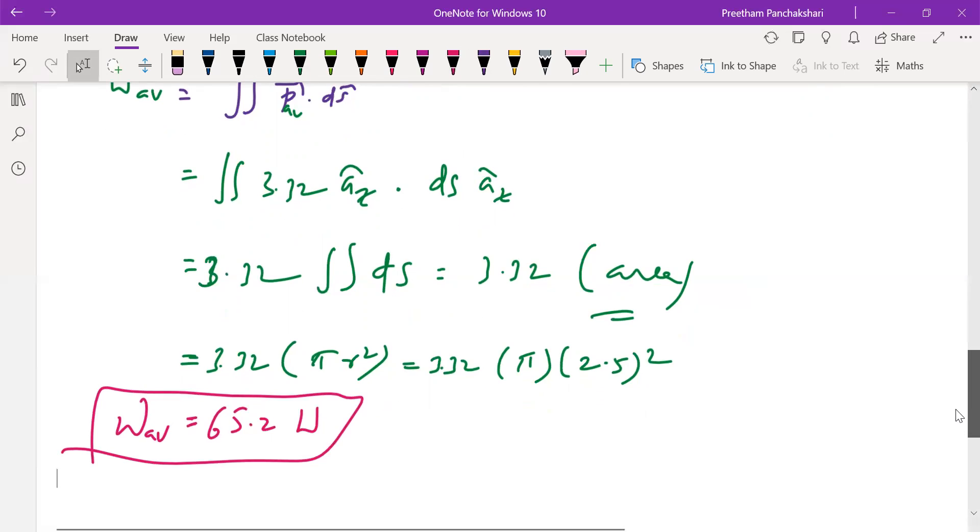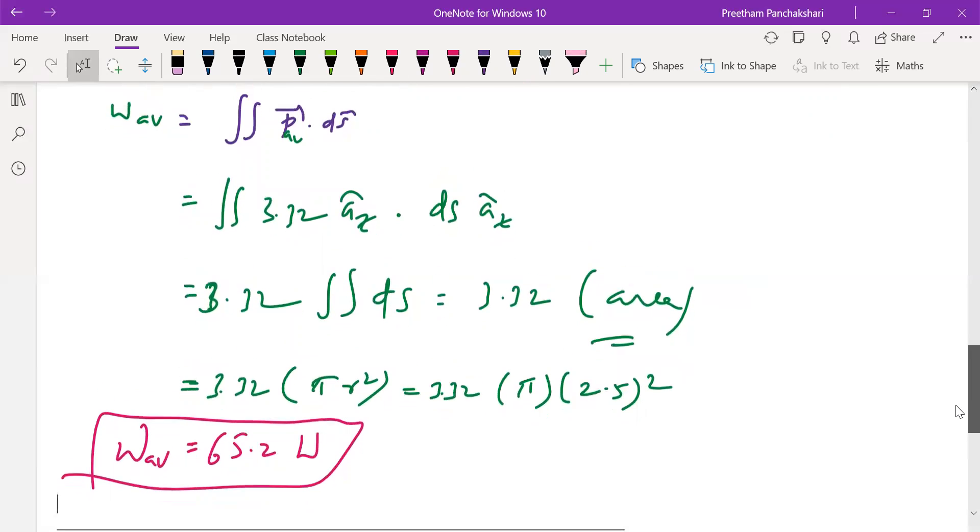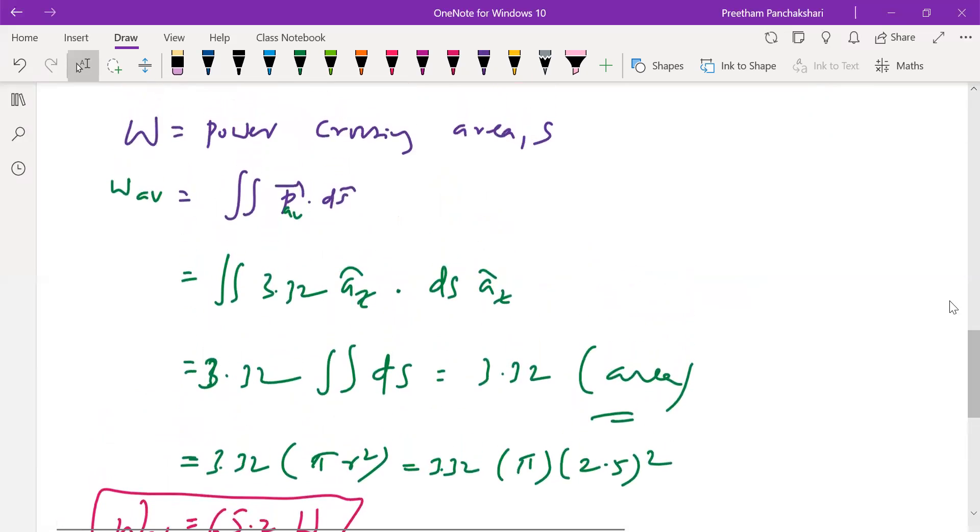So that is the solution. In summary, Poynting vector type gives us power density and power density multiplied with area will give us power crossing a particular area.